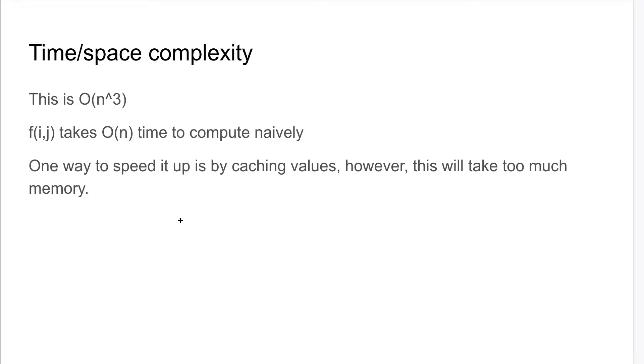One way to speed this up is by caching the values of f(i,j) because you can try to remove one character and hope that they're still matching. But this will take too much memory, so we need a different solution that doesn't take n squared memory.